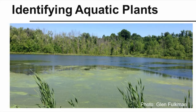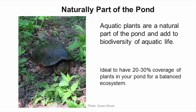Today I'm going to be talking about identifying aquatic plants. Aquatic plants are an integral part of the pond ecosystem. An ideal ratio is to have 20-30% coverage of plants in your pond to promote habitat and maintain a healthy balance between plants and aquatic life like turtles and frogs. It is necessary to know what kinds of plants are in your pond if you plan to control them based on the pond's intended use. This video will discuss the main types of aquatic plants and give several examples of each.